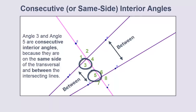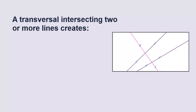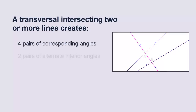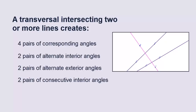And that's it. To recap, a transversal intersecting two lines creates a series of pairs of angles. These are called corresponding angles, alternate interior angles, alternate exterior angles, and consecutive interior angles. Now that you know the names, you're ready to understand the relationships when those intersecting lines are parallel.